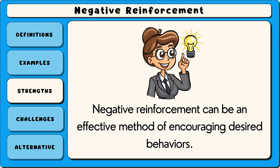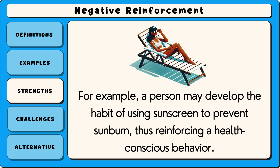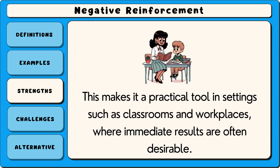Negative reinforcement can be an effective method of encouraging desired behaviours. One of its primary advantages is that it motivates individuals to act in order to improve their circumstances. For example, a person may develop the habit of using sunscreen to prevent sunburn, thus reinforcing a health-conscious behaviour. Additionally, negative reinforcement often leads to rapid behavioural changes, because it creates a direct connection between the action and the removal of discomfort. This makes it a practical tool in settings such as classrooms and workplaces, where immediate results are often desirable.